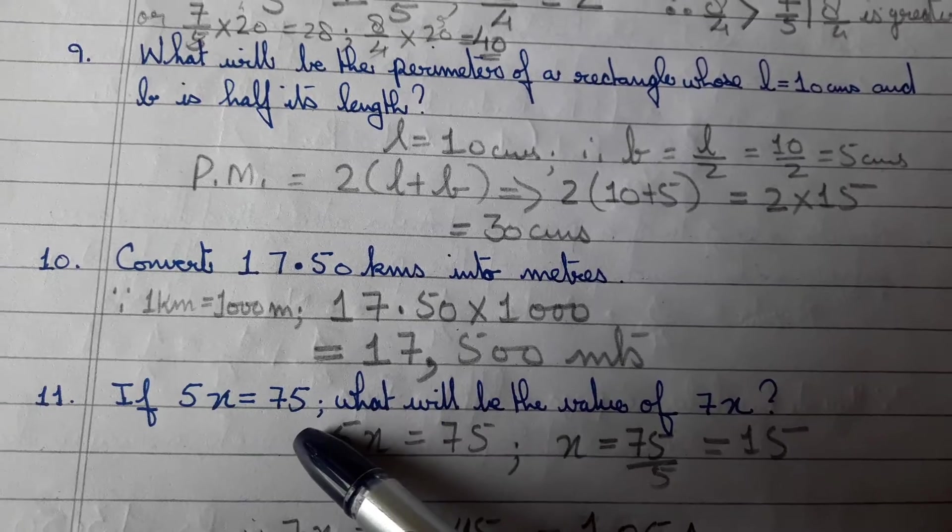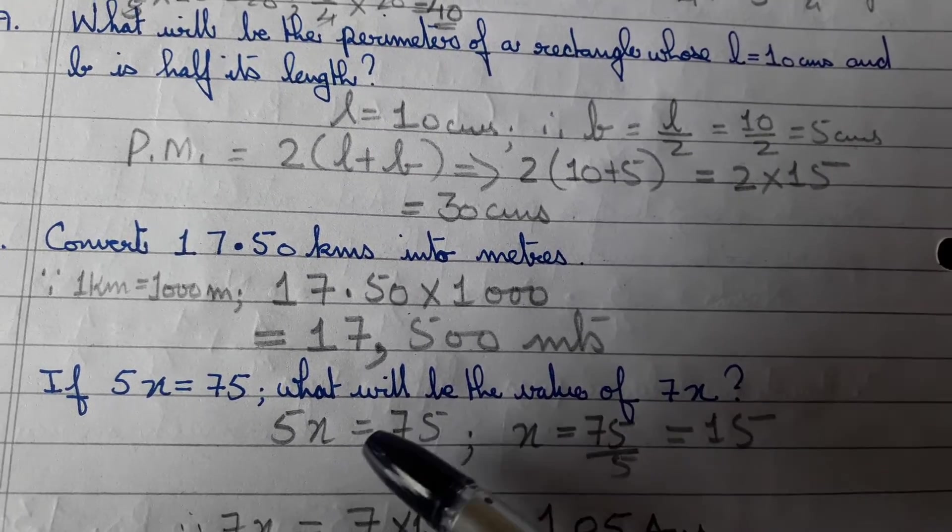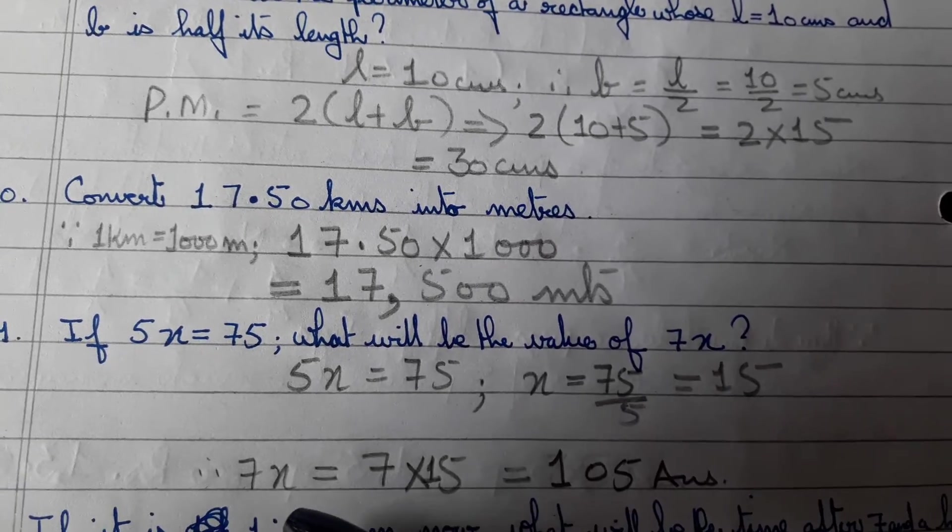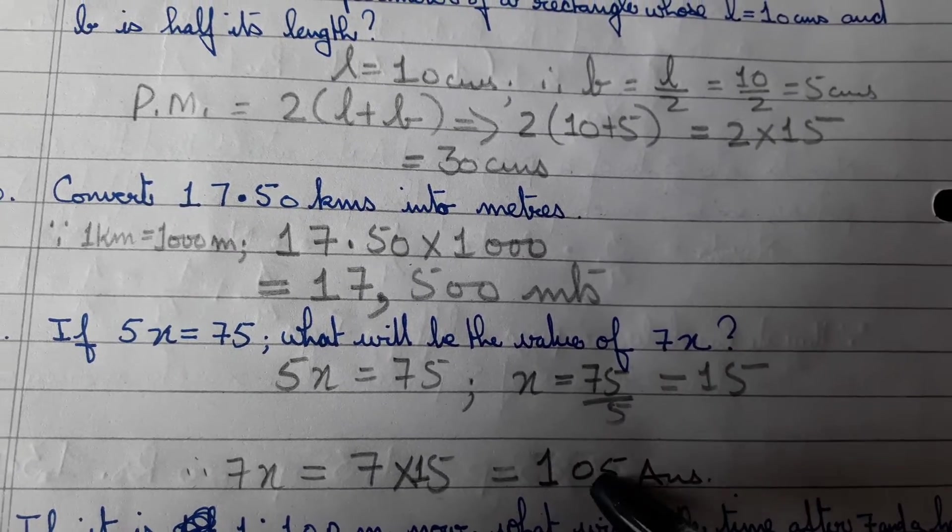If 5x is equal to 75, what will be the value of 7x? So 5x is 75, find the value of x. 75 divided by 5 is 15, and 7 into 15 will give you the value of 7x, which is 105.